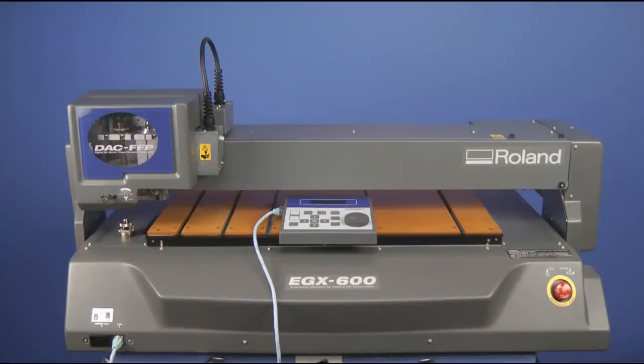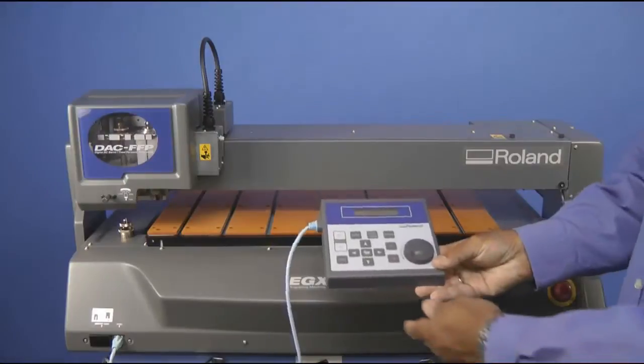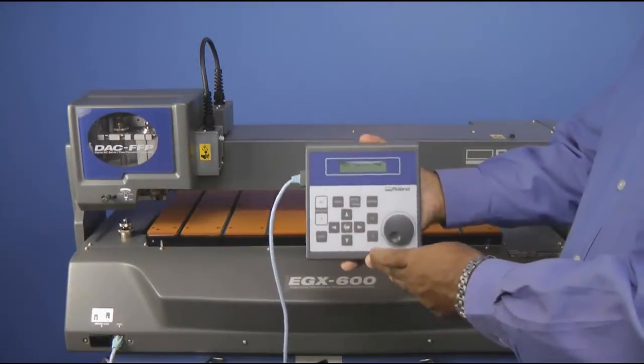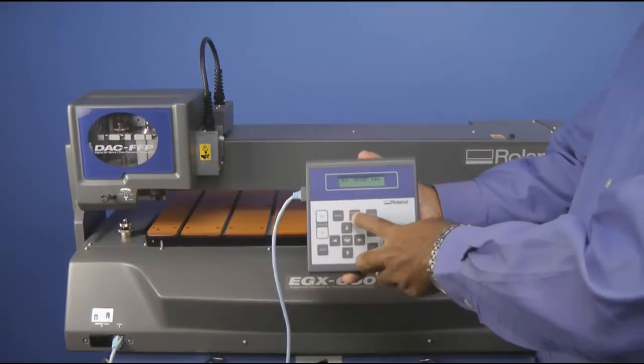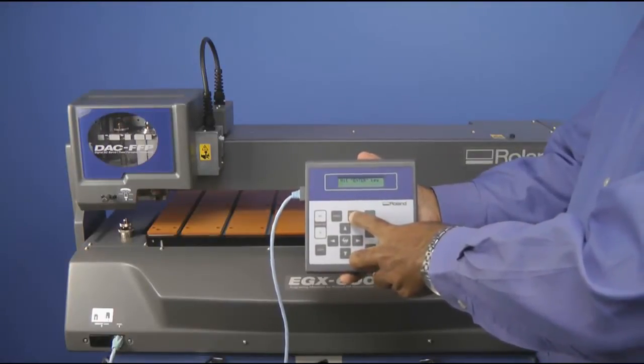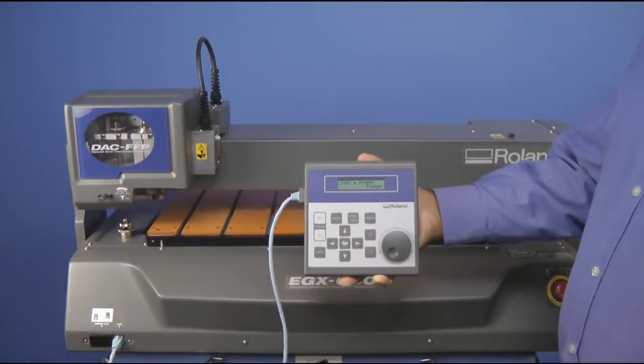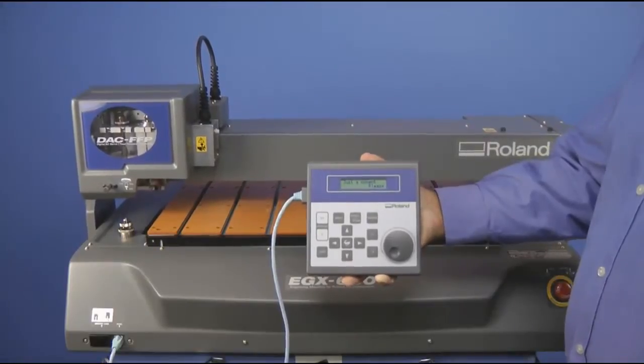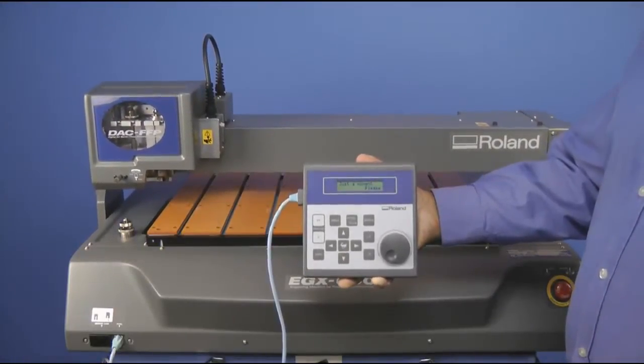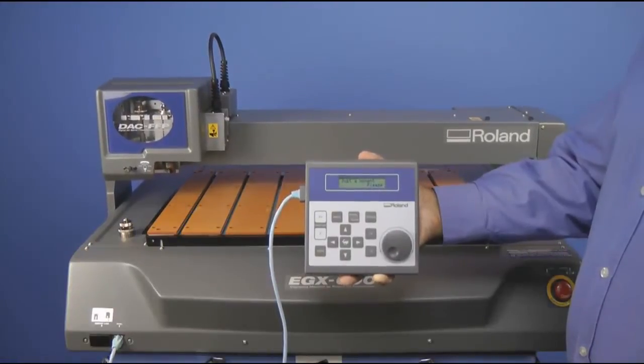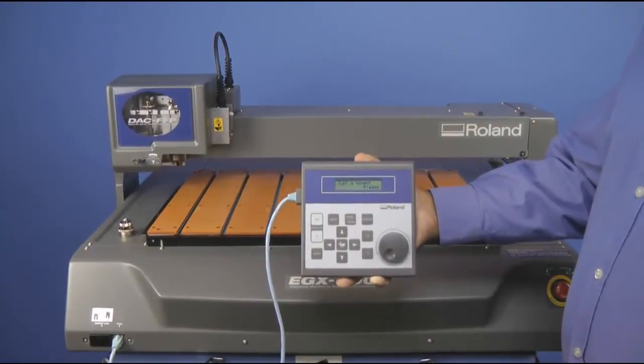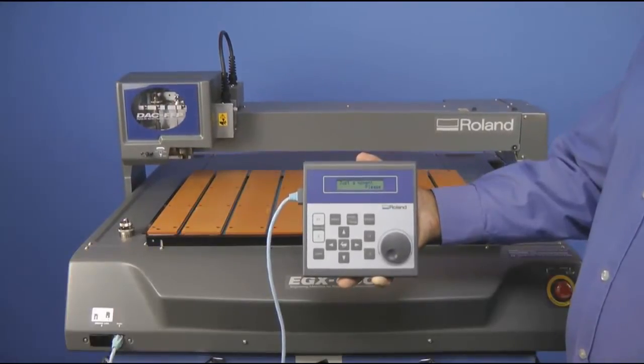To get started, first we want to power on the engraver. Once we power on the machine, on the control panel, press the enter key to initialize the engraver. Once the engraver is initialized, the display will be at the default menu which shows your X, Y, Z position, and spindle speed.